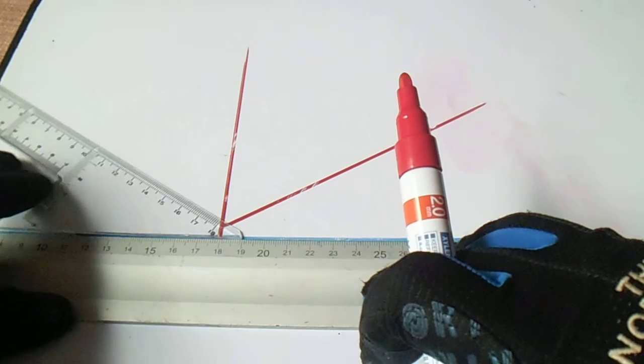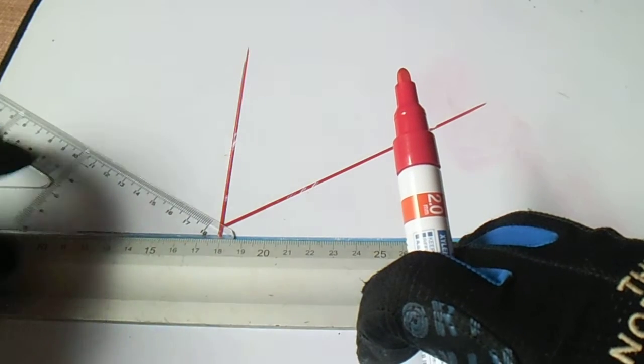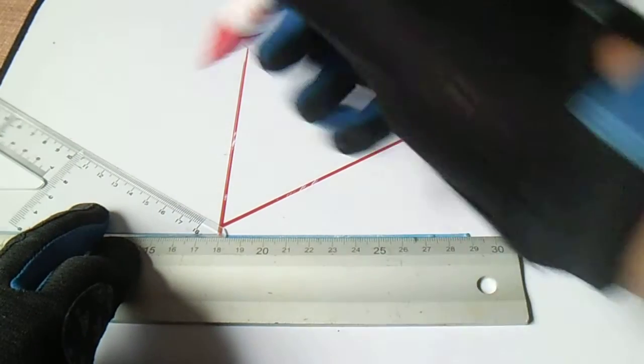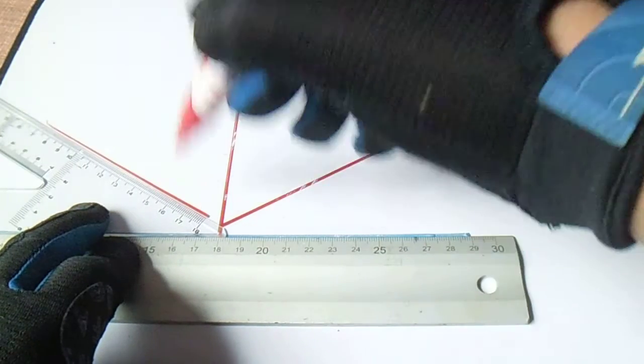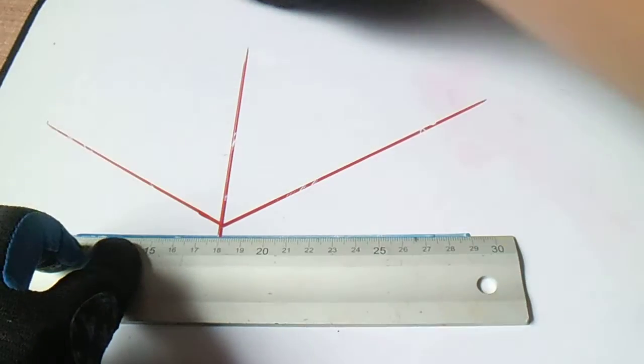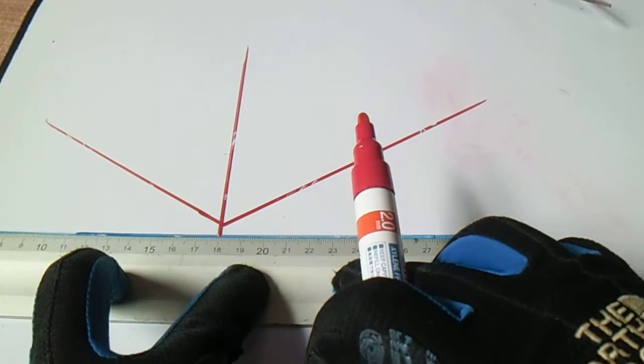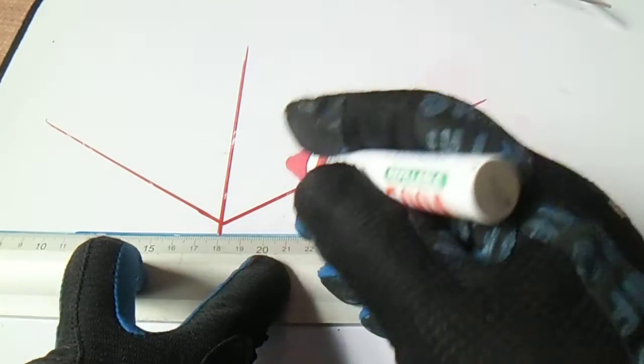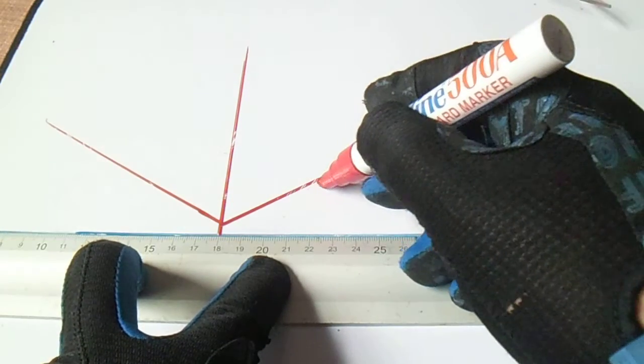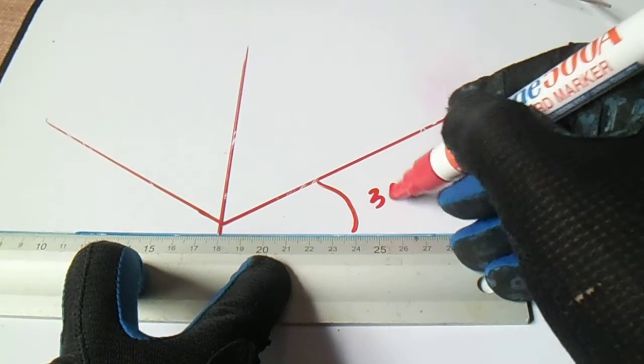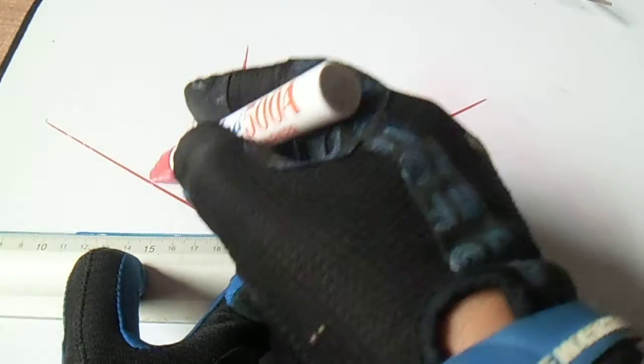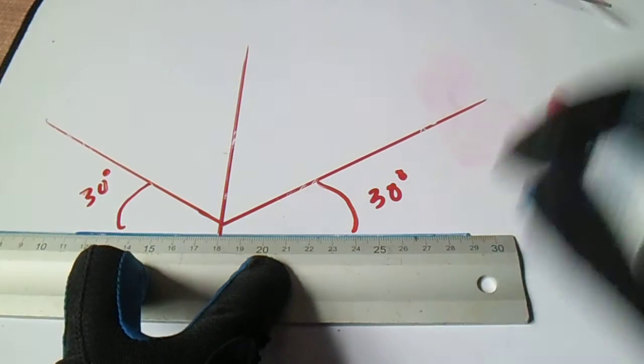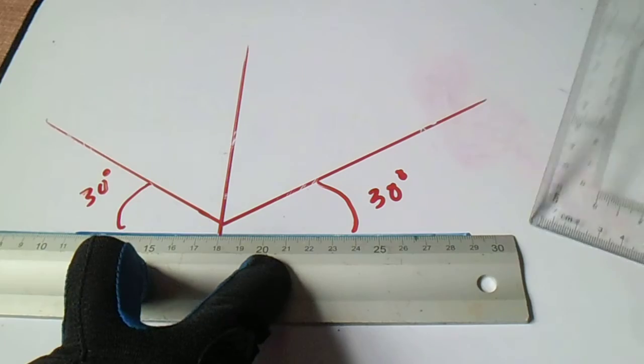Then put another one side, so this is also 30 degrees. Just hold it, this is our ruler, this is our reference line, and our 30 degrees is this, our 30 degrees. Okay, so next...